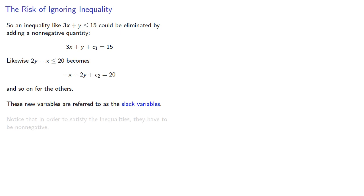And notice that in order to satisfy the inequalities, they have to be non-negative. And if any of the slack variables are zero, the corresponding point is going to be on a boundary line.